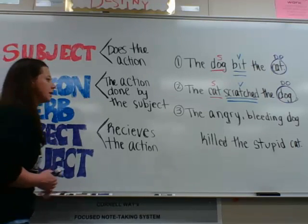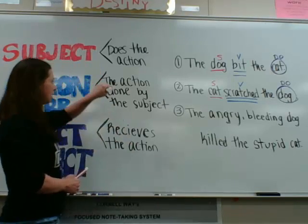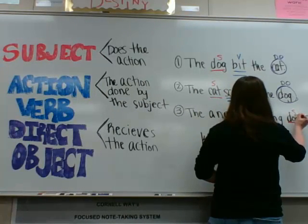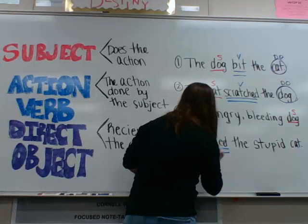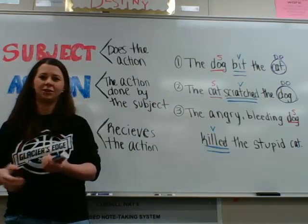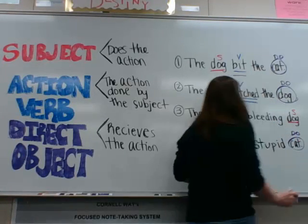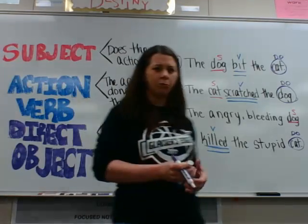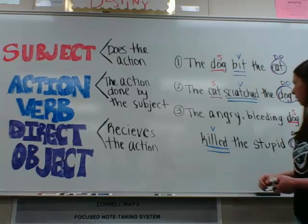Now the third sentence: 'The angry, bleeding dog killed the stupid cat.' It's a longer sentence, but let's find the subject. What killed the stupid cat? The dog did — underline once, write an S above it. What did the dog do? The dog killed — underline twice, write a V above it. What did the dog kill? The cat — that's the direct object. Another way to think of it: what is receiving the killing? The cat. The dog is receiving the scratching. The cat is receiving the biting.